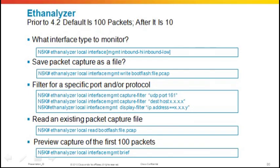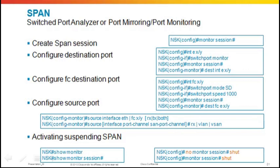To monitor traffic between hosts and switched traffic on the 5K, use SPAN — Switched Port Analyzer. Configuration is similar to IOS with one difference: to SPAN Fibre Channel traffic, go to the Fibre Channel interface and set the switchport mode to SD. For Ethernet traffic, configuration is about the same. Configure your source port and view your SPAN session with the 'show monitor' command. Don't forget to un-shut or shut your monitoring session to activate or deactivate it.